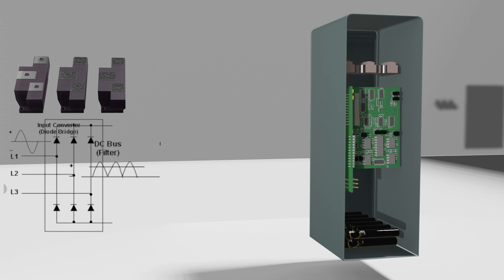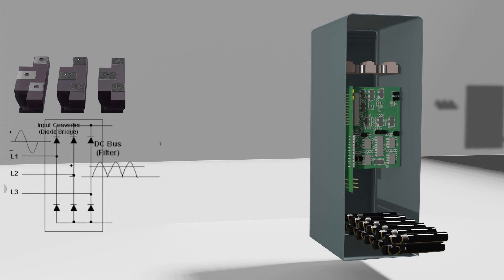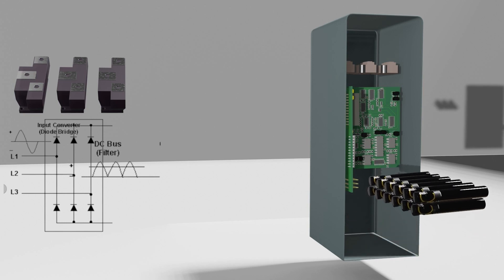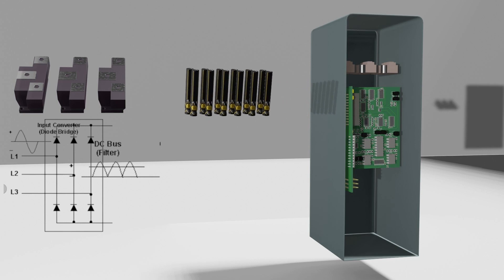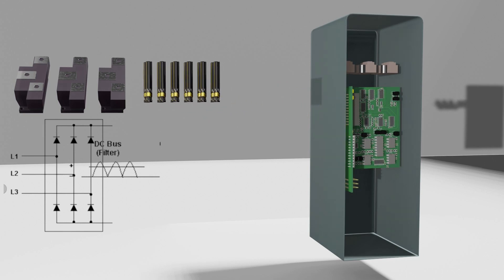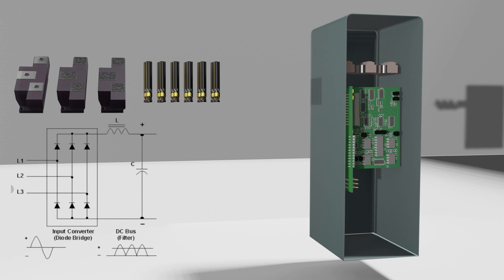After that, the second component is the DC bus, which consists of multiple capacitor banks, as you see here. It is used for the purpose of smoothing and filtering the DC supply. The symbolic representation is just like this. So this capacitor filters the pulsating DC supply into pure DC, as you see here.